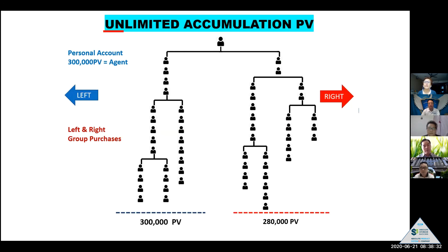Christine, you can answer me. So left leg 300,000 and right leg 280,000. I work harder on 280,000 to make it 300,000. Yeah, that's right.